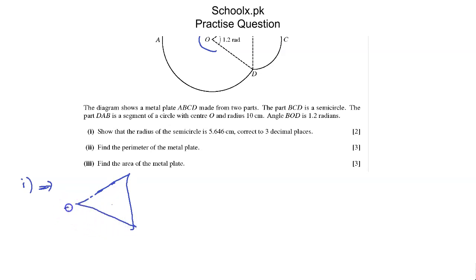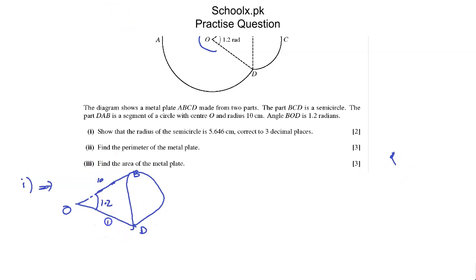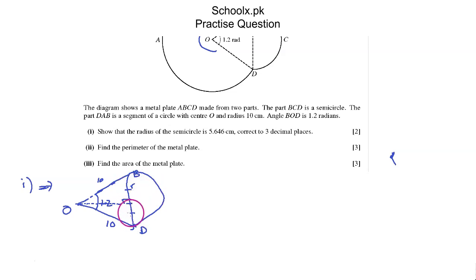Looking at the triangle: this is B, this is O, and this is D — here is our semicircle. The angle is 1.2 radians and the radius is 10 cm. Since triangle OBD is isosceles, if I draw a line from vertex O to the base BD, this line intersects the base at 90 degrees and at the midpoint of BD. Let's mark this point as M — I need to find MB, which equals the radius of the semicircle.